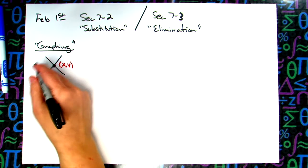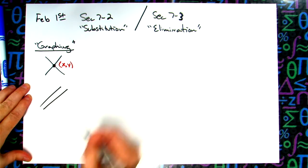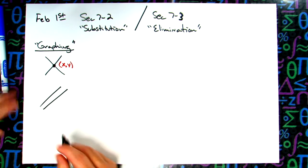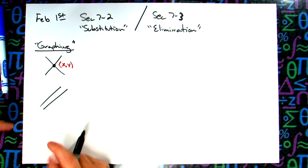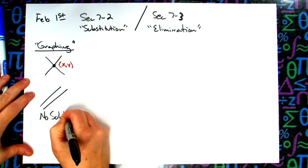If I graph two lines, they could come up and they would be parallel. That means they wouldn't cross. When they don't cross there is no solution. So this one is no solution.